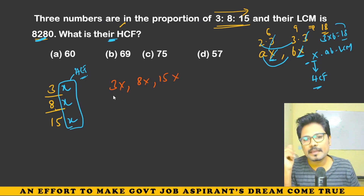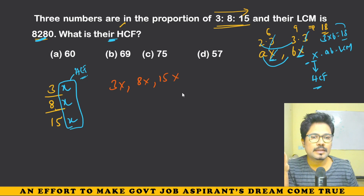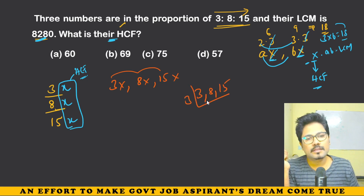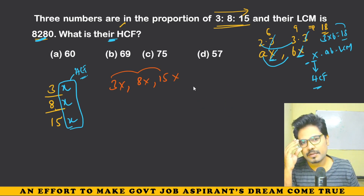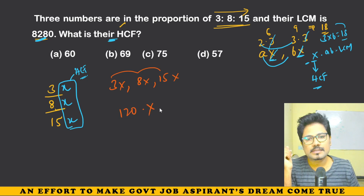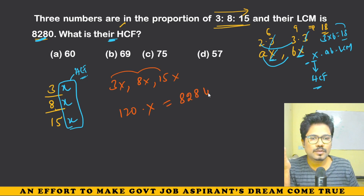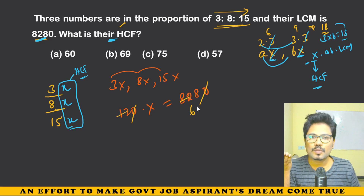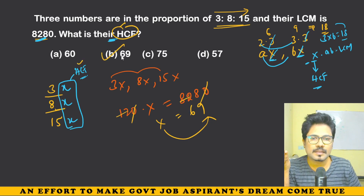LCM of 3, 8, and 15 is 15 × 8 = 120. So LCM of the actual numbers is 120x. We are given that 120x = 8280. Therefore x = 8280/120 = 69. So x = 69, and since x is the HCF, the HCF is 69. Simple question with a straightforward approach.